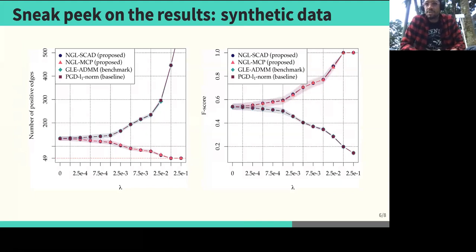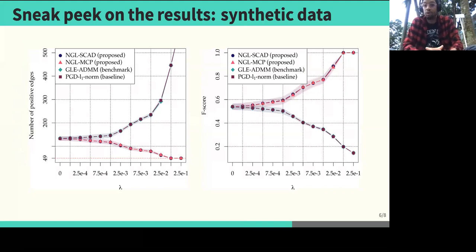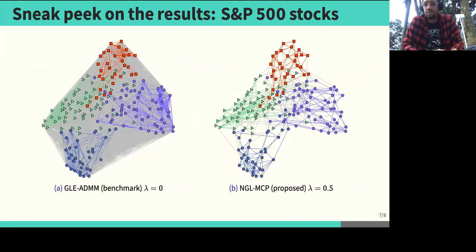Here we show some results on synthetic data where we can see that as lambda increases we are able to recover sparser graphical representations, and not only that, we are also able to recover the true underlying graph. We also perform experiments on real-world data sets.